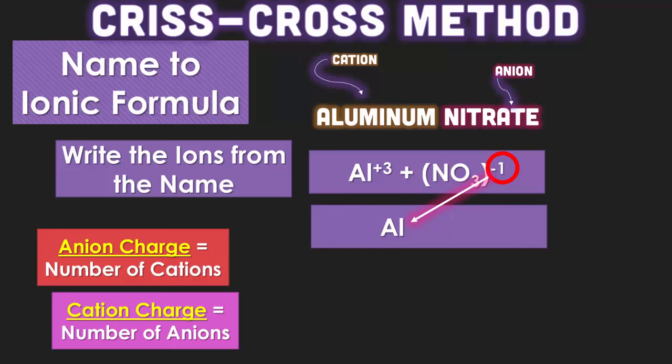Watch as it goes through. So notice that the 1 represented how many aluminum ions we would need, and the 3 from the positive 3 charge represented how many nitrate ions we would need. That is the entire crisscross method right there.